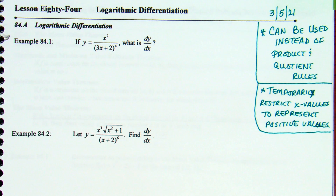If the inside of a log cannot be negative, while working the problem you temporarily restrict the x values — just in your mind, x has to be positive in this situation. But when we get to the end, we won't actually necessarily have a log in our answer. It's just kind of temporary along the way.